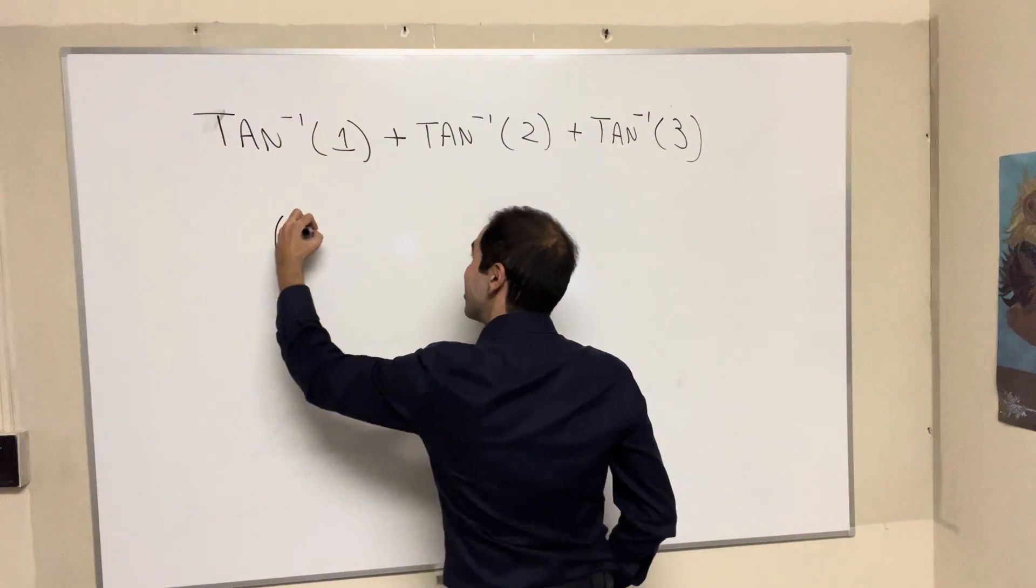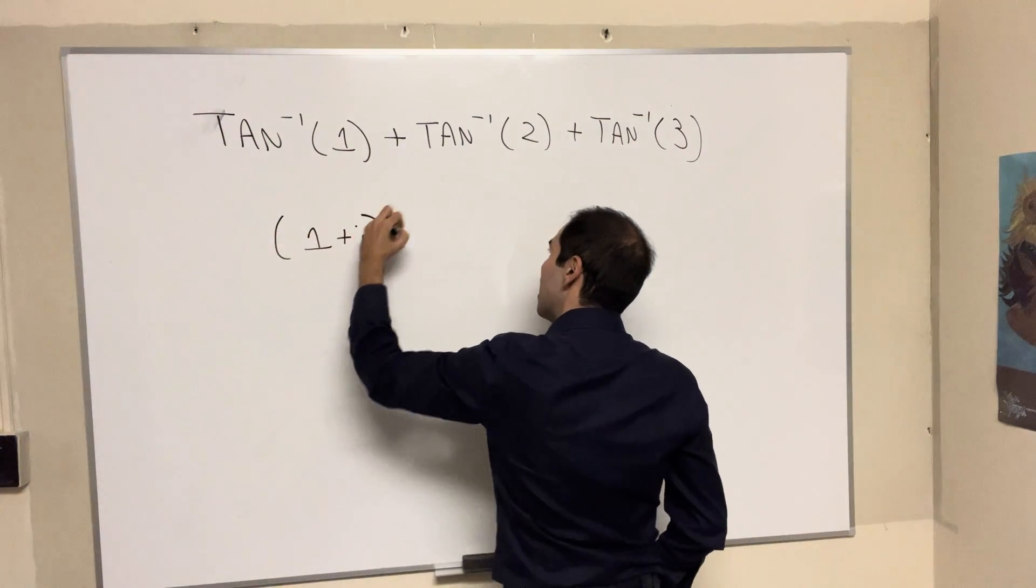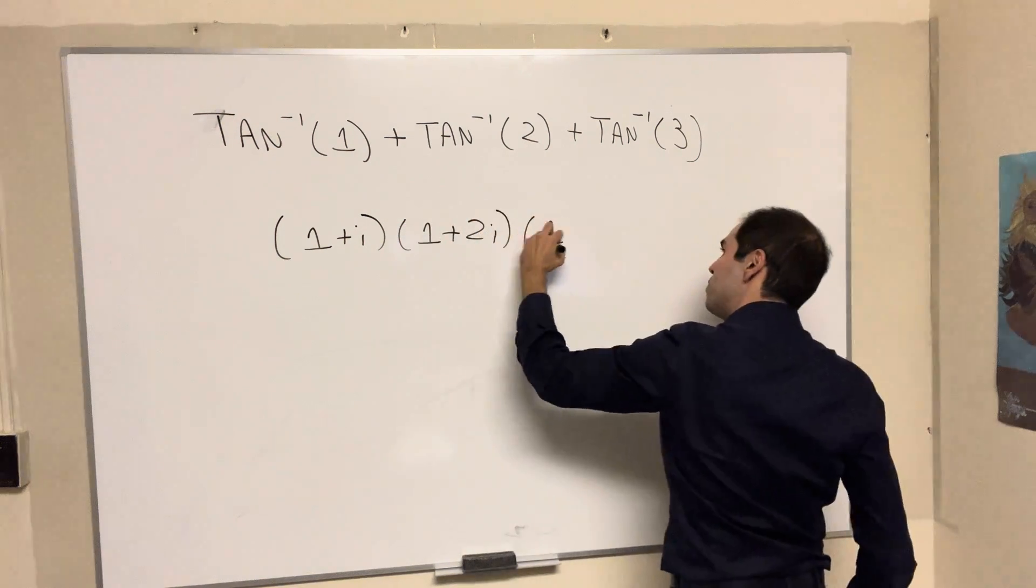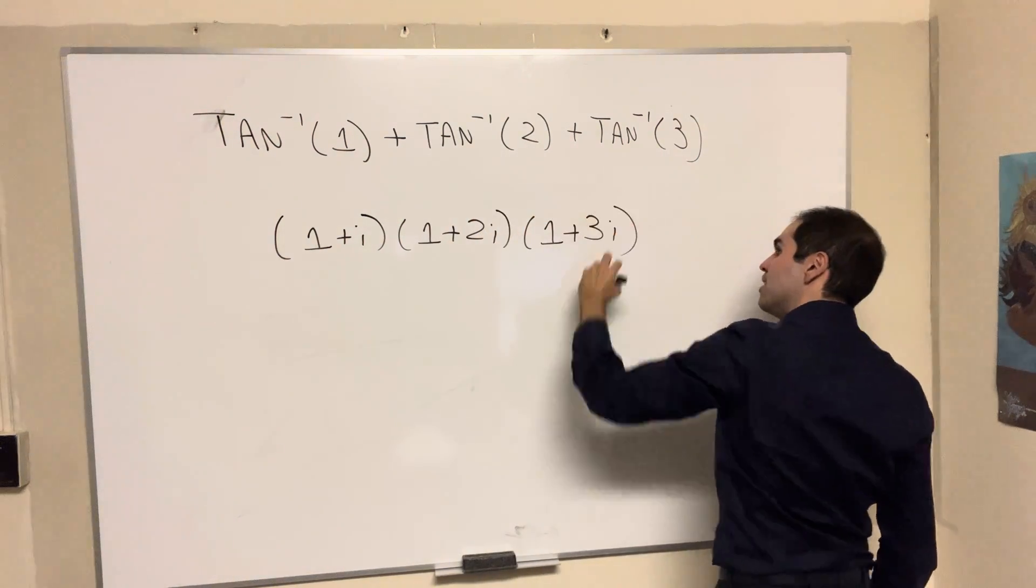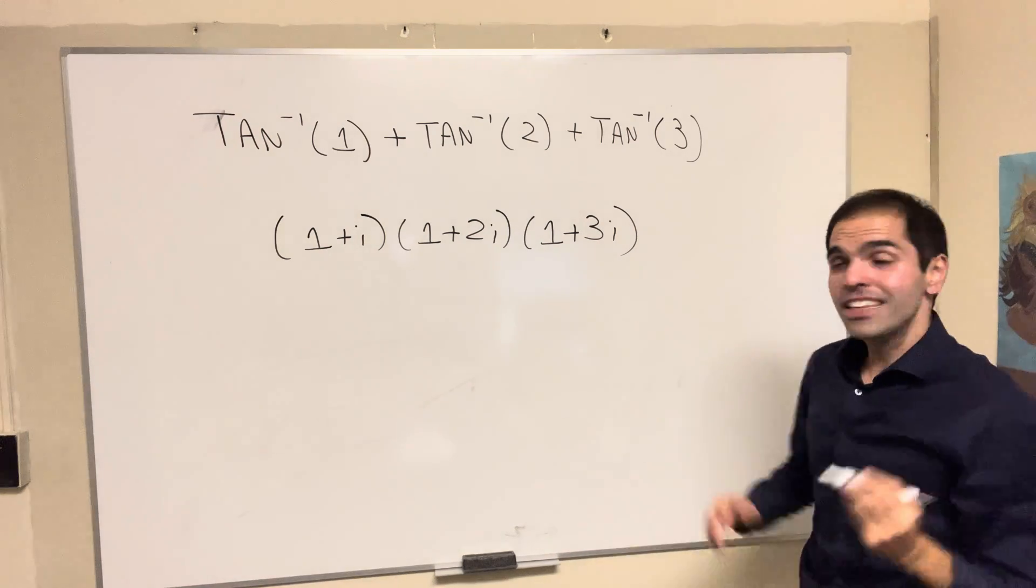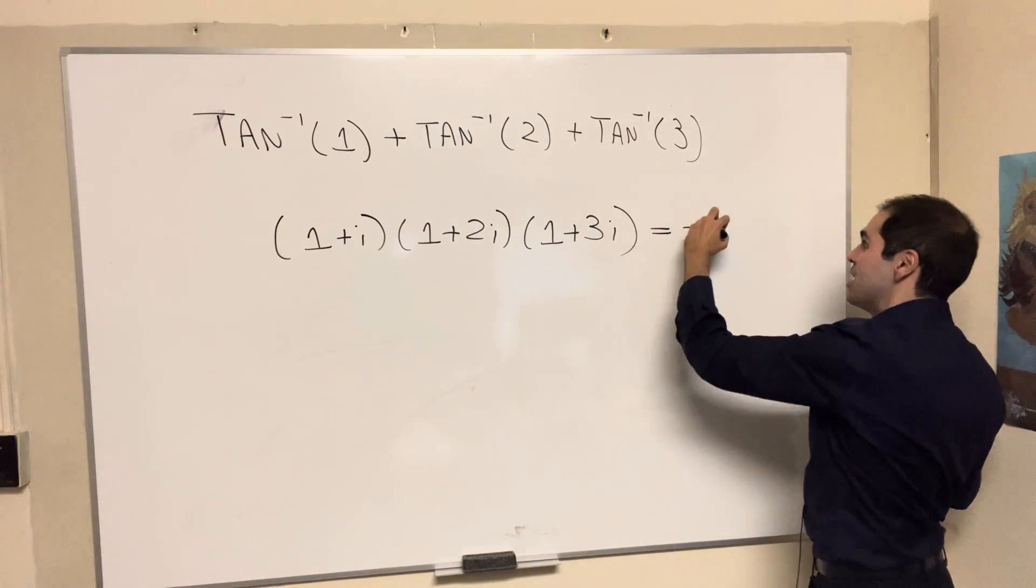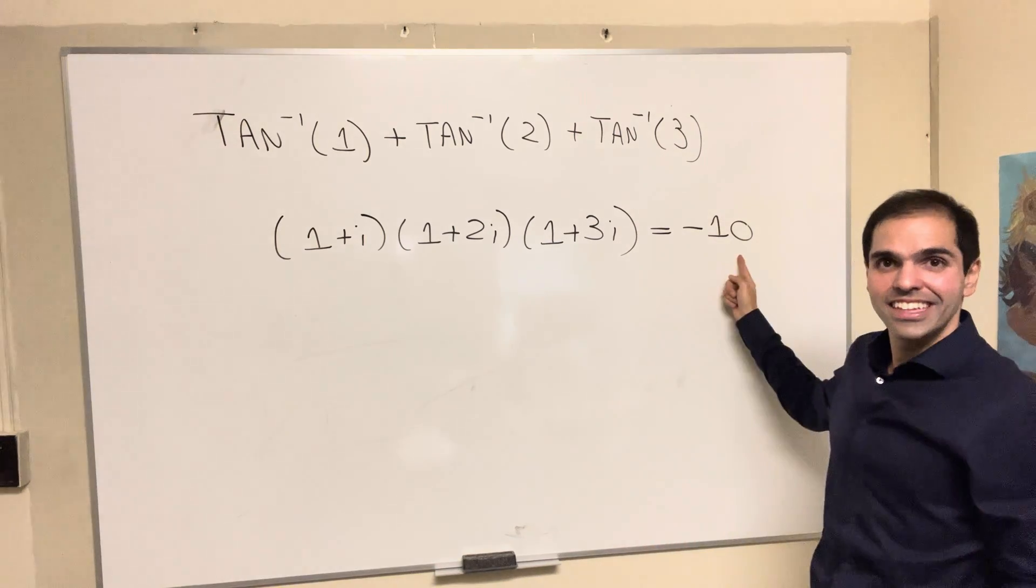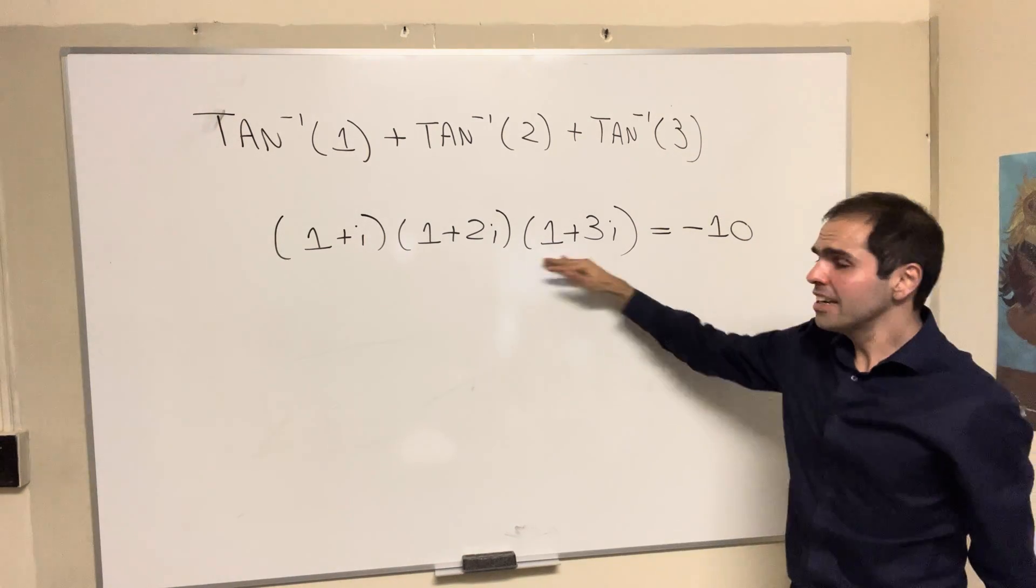Because if you consider (1+i) times (1+2i) times (1+3i), and you expand this out, it turns out you get the number -10. Are you for real? Yes, it is real.